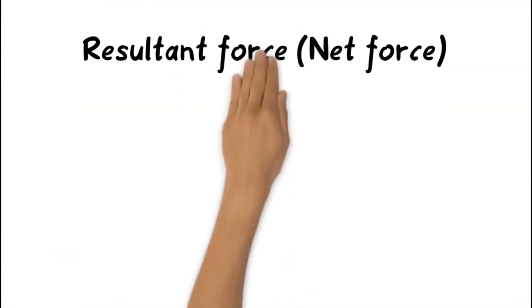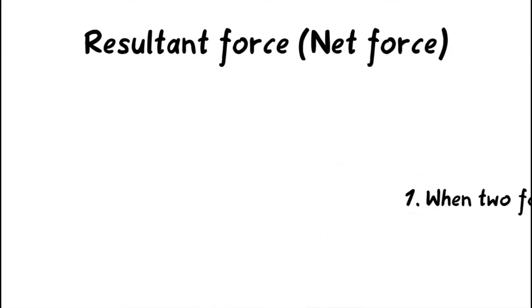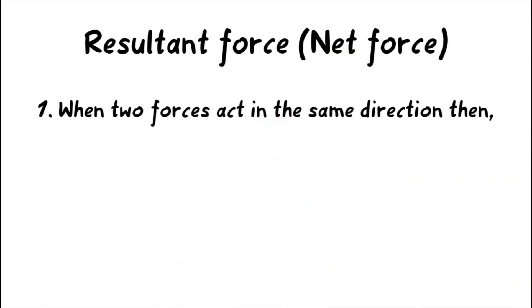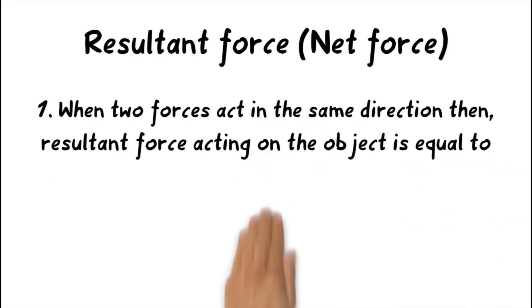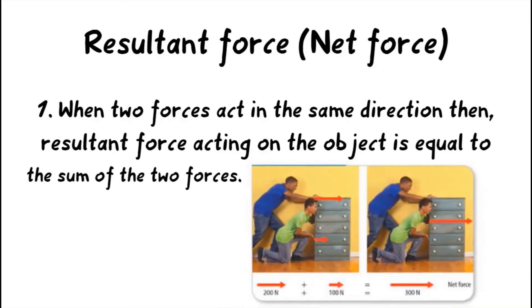Now our next topic is resultant force or net force. First case, when two forces act in the same direction, then the resultant force acting on the object is equal to the sum of two forces. As you can see in the picture, two forces are applied in the same direction. So resultant force is the sum of two forces.